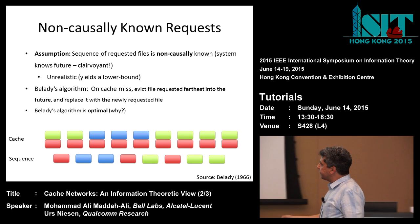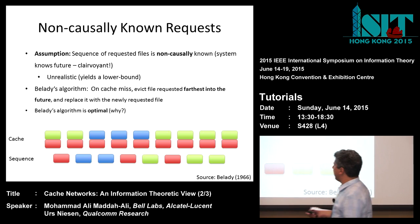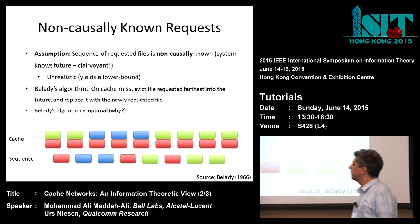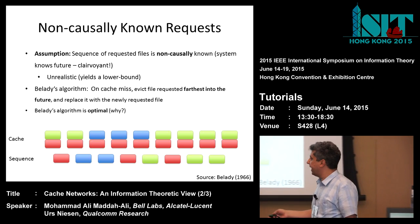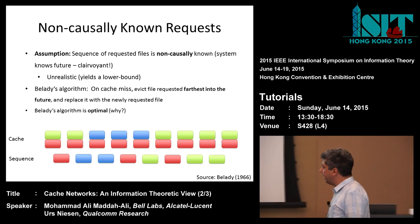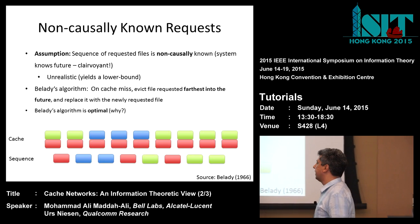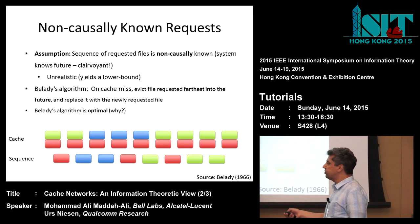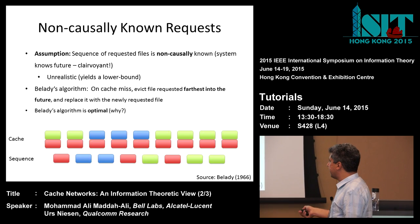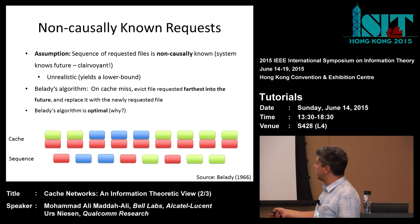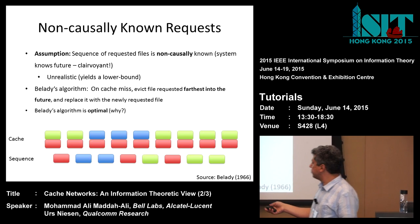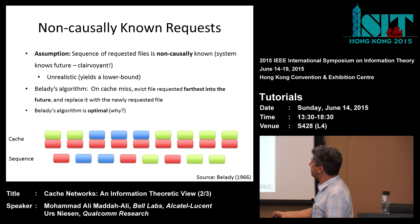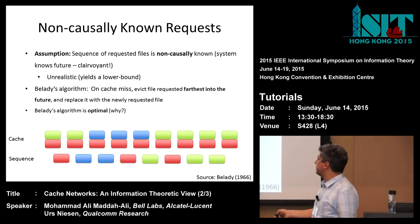For example, assume we have this sequence and initially the cache has the green file and the red file. First, we have the red file — it's there, so we don't change the cache; it stays green and red. Now we have the blue file, which is not there, so we need to fetch it from the server and update the cache. We need to evict one of the two files. We look at the future: we need the red file in two steps and the green file in three steps. So we evict the green file and replace it with the blue file. The next request is blue — already there, no change. Then red — red is there, no change. And so on.